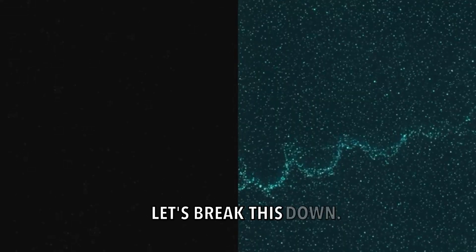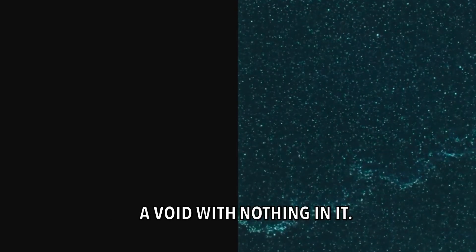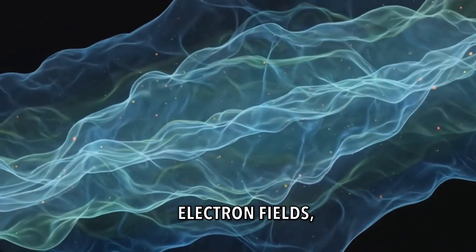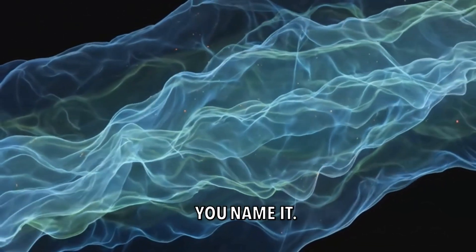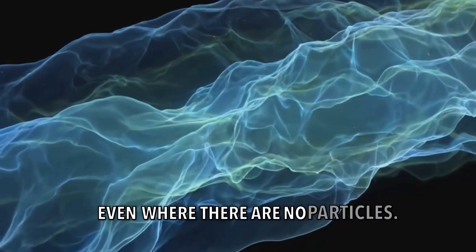Let's break this down. In classical physics, a vacuum is simply empty space, a void with nothing in it. But quantum mechanics tells us a different story. At the quantum level, space is filled with fields: electromagnetic fields, electron fields, quark fields, you name it. These fields permeate all of space, even where there are no particles.